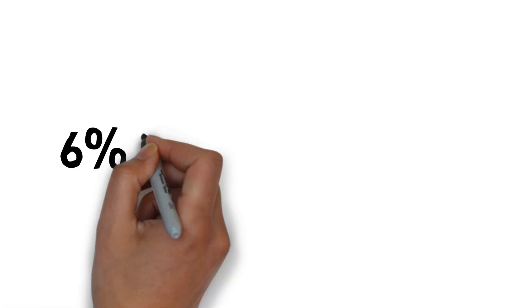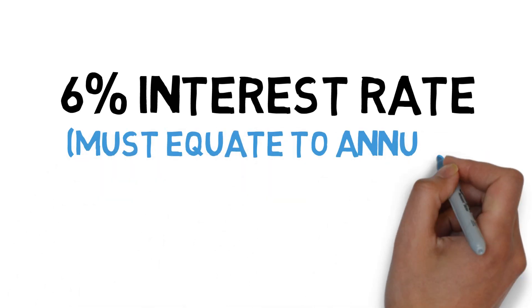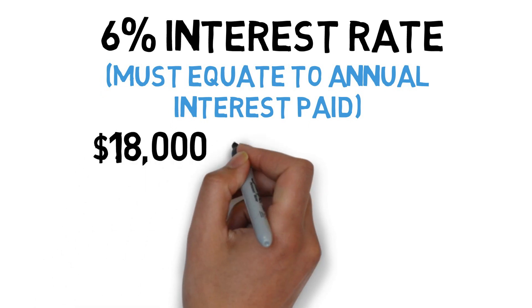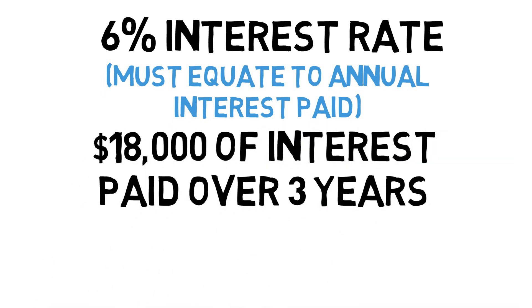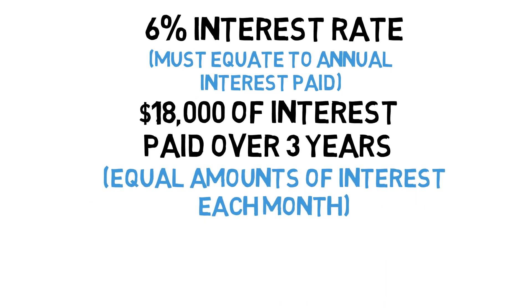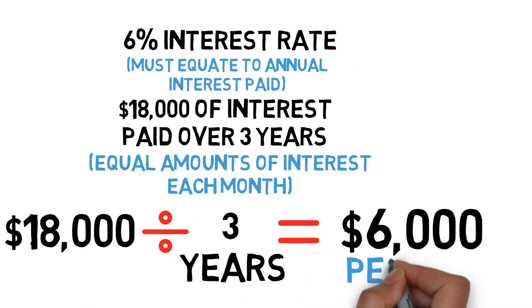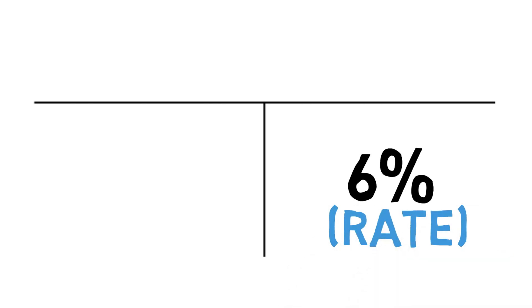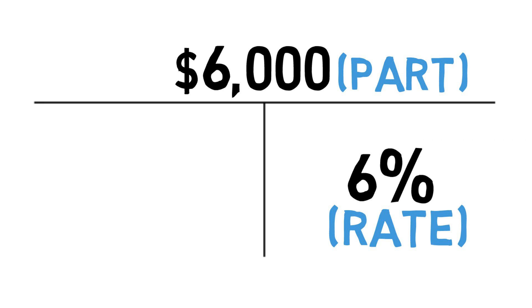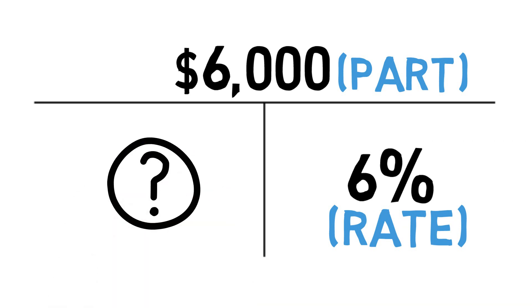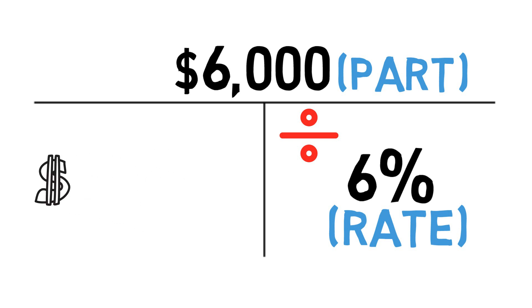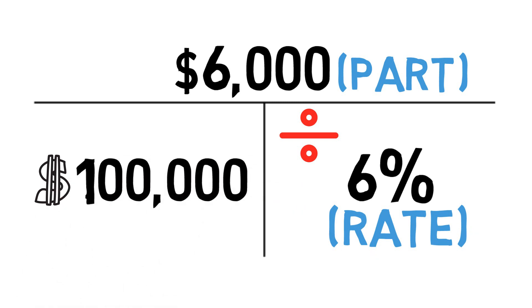Let's first look at that 6% annual interest rate — it has to equate to annual interest paid. We have $18,000 of interest paid over three years. Since a straight note has equal amounts of interest each month, we take $18,000 divided by three years, which means we paid $6,000 in interest per year. In our T formula, the 6% interest rate goes on the bottom right. The $6,000 in interest is the part — a smaller number in relationship to the loan amount — so we take $6,000 divided by 6%, giving us a loan amount of $100,000.